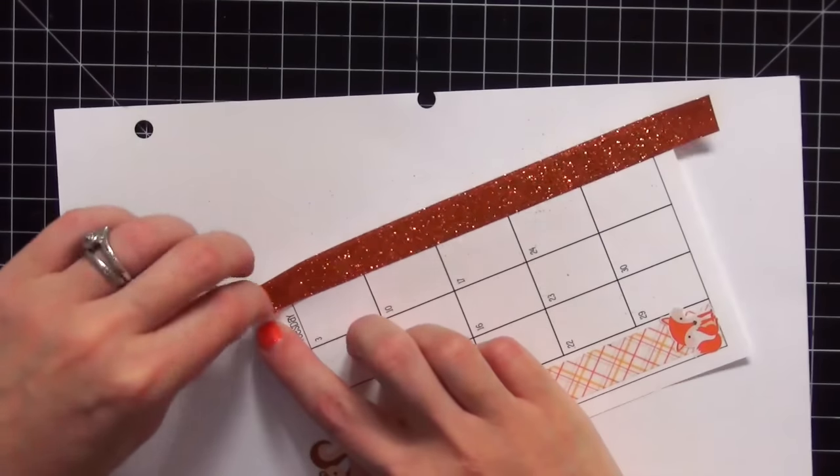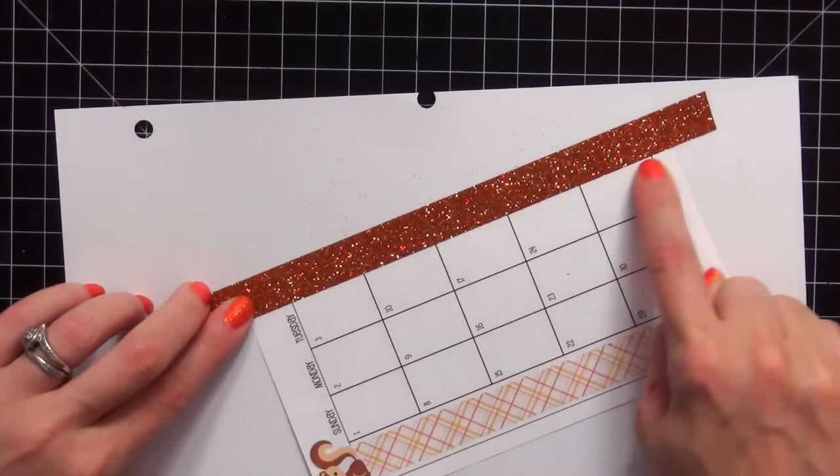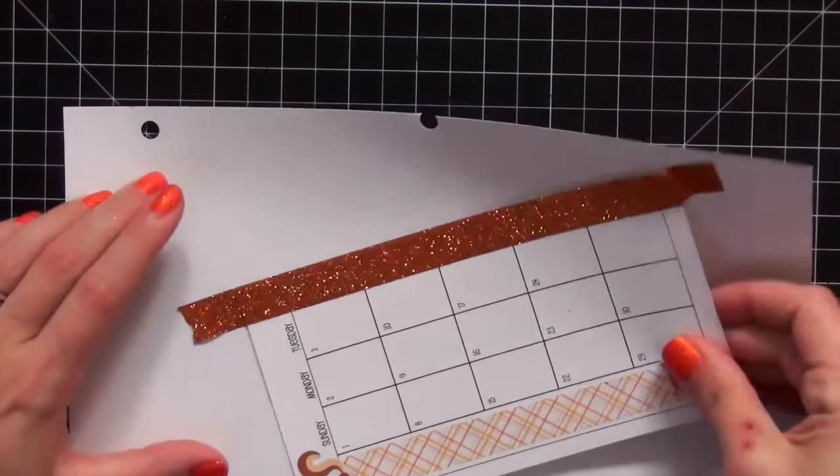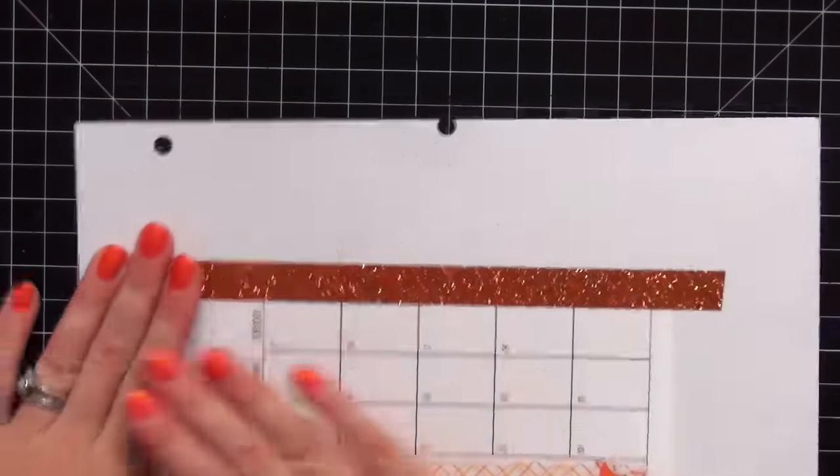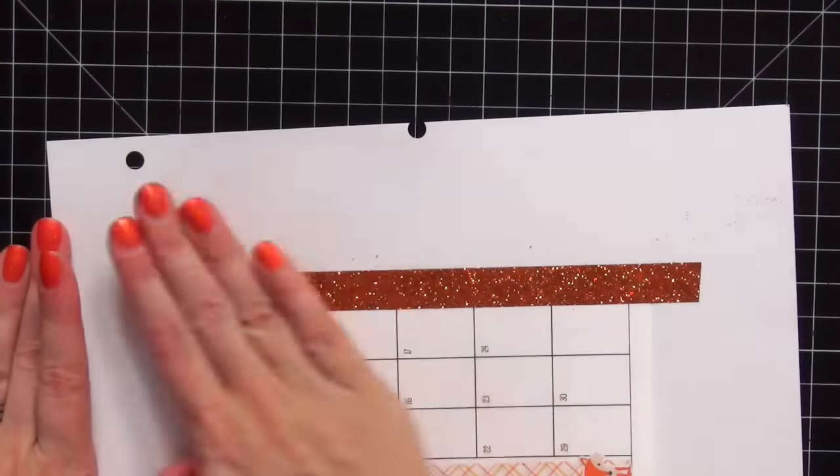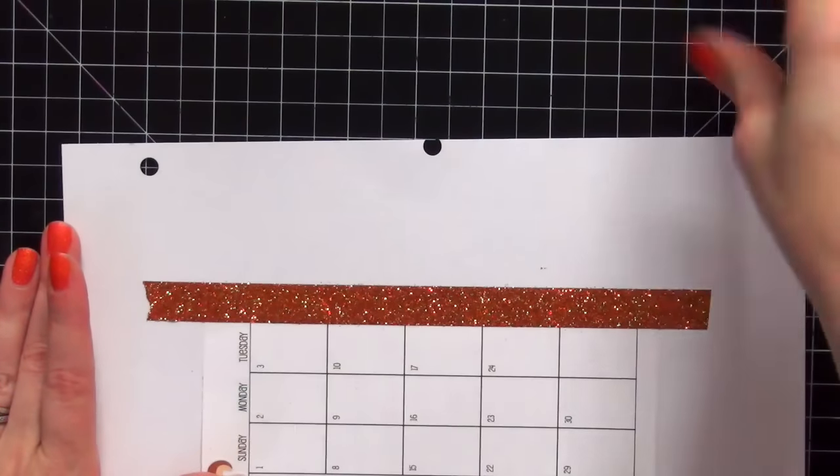So let me just make sure it's how I want it to be. I usually line it up right to the edge of the calendar. Okay, so we're going to put that down. And then I'm going to try and clean off as much glitter as possible. This gets a little difficult guys because I mean it is literally everywhere.